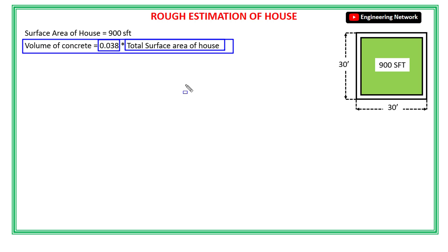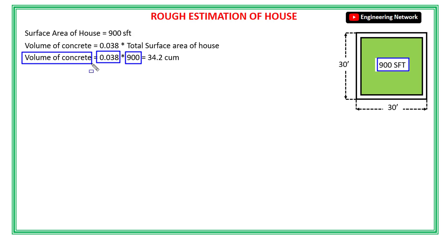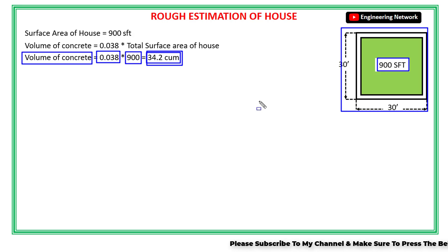So the volume of concrete for this house is equal to 0.038 multiplied by 900, which is the total surface area. After calculations, the total volume of concrete that will be used in this house is 34.2 cubic meters. This is the rough estimation — the amount of concrete may increase or decrease after construction is started.